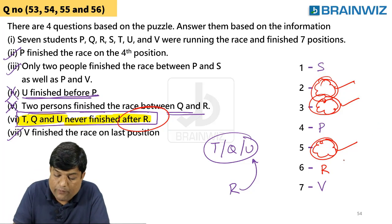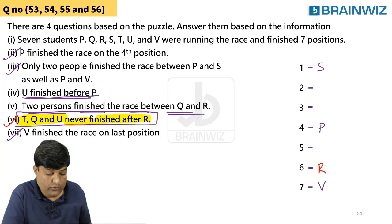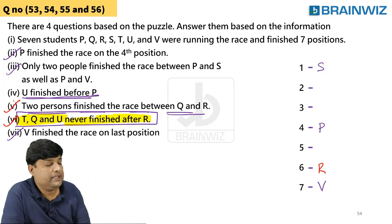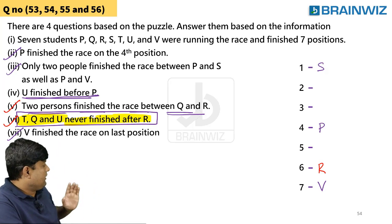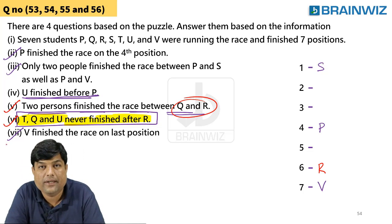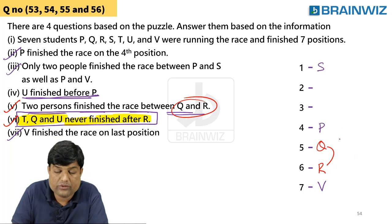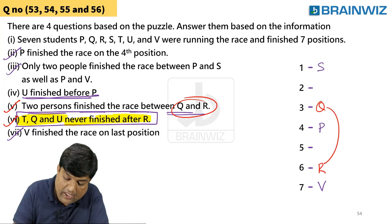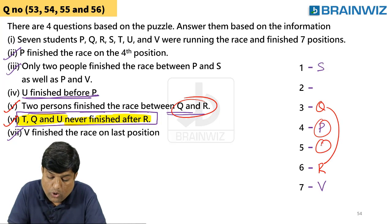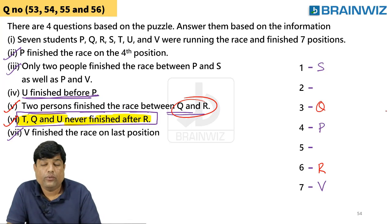Now using the fifth point: there are two persons who finished between Q and R. You know the place of R, so can Q be right next to R? No — zero people would be between them. So placing Q with two people between Q and R: that gives us the positions of Q and R. One, two — two people between them. We have understood the positions.